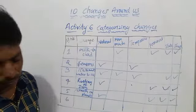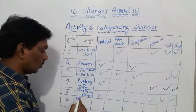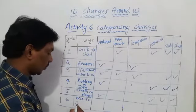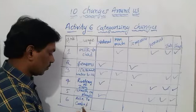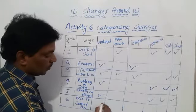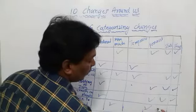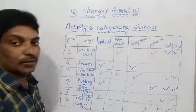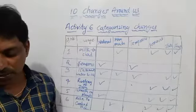The sixth example is rice to cooked rice. It is a man-made activity. It is a permanent change. Both state and shape also change. That completes the sixth entry in our table.